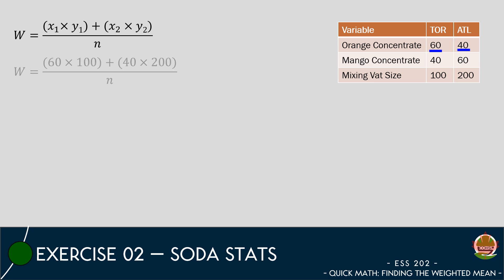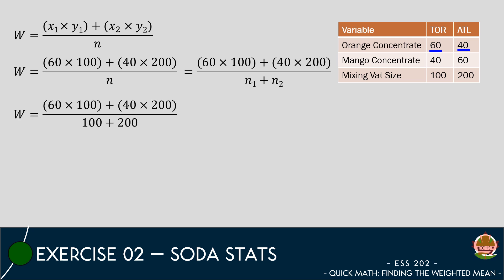These values will be multiplied by their respective mixing vat sizes. However, we need to figure out what value to use for N. We know that N is the total number of dataset values and since we have two different tank sizes, we need to add those numbers together. Once we insert all of the numbers into the formula, we can simply multiply the orange concentrations with the mixing vat sizes and add the two mixing vat sizes together.